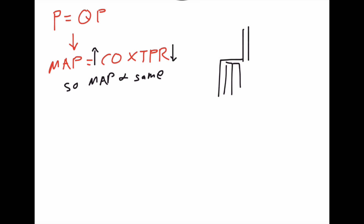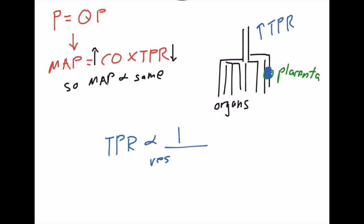If you think about things, most organs in the body are actually in parallel. So say these are the organs, and say the placenta is just like another organ in parallel. What would happen, say for instance, if the placenta got occluded? The TPR will go up, and that's because the TPR is proportional to 1 over the vessels in parallel.